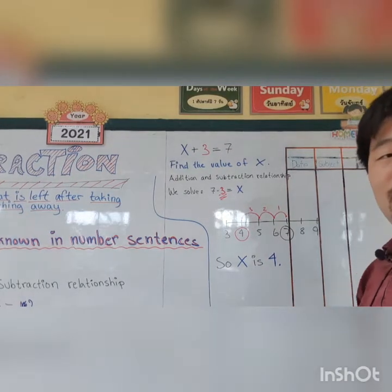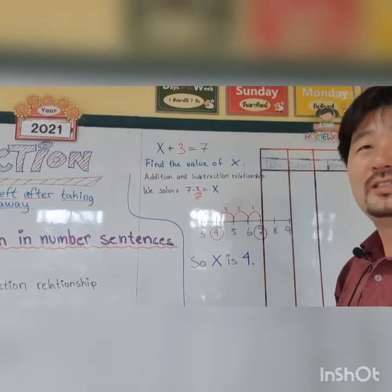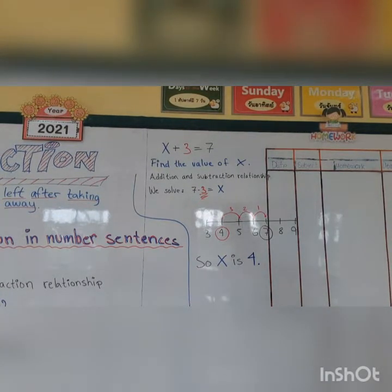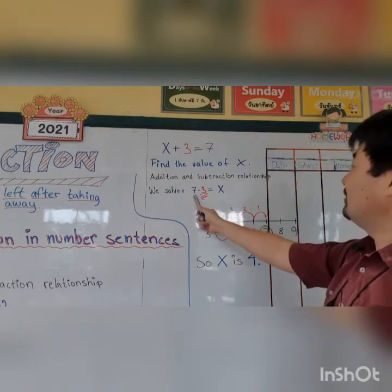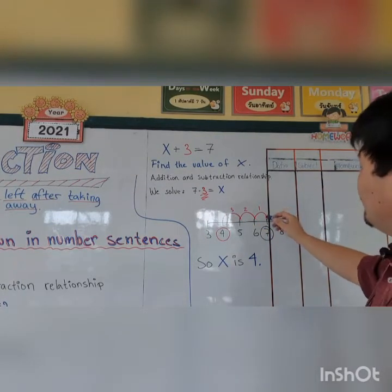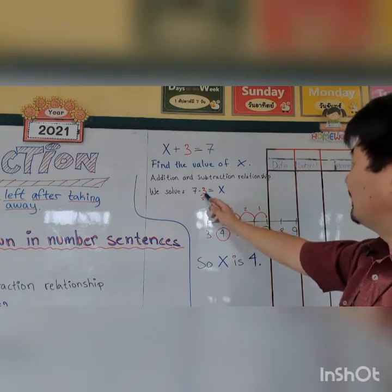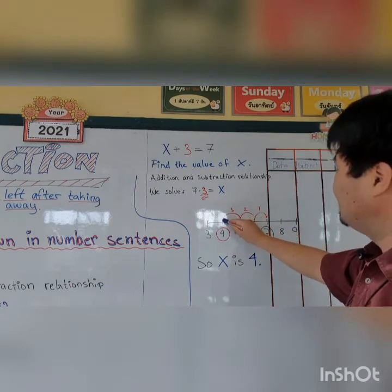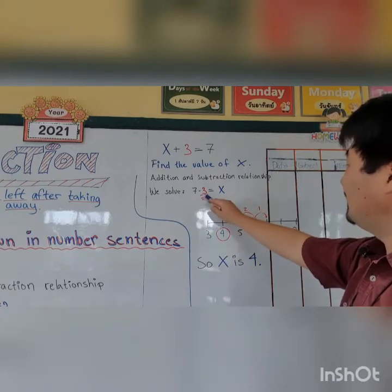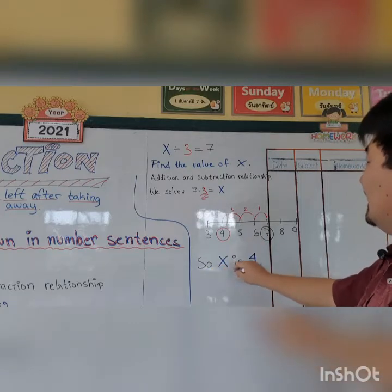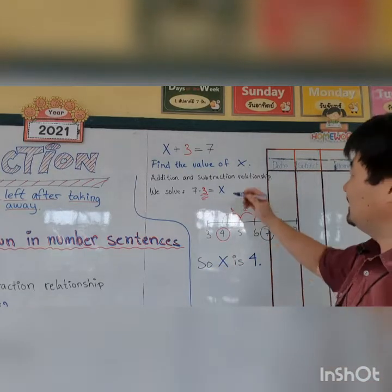So here we solve it using a number line. Seven minus three equals X, so we have seven here on the number line. Then we jump three steps — minus three. One step, two steps, three steps — and then we land on number four. So X is four.